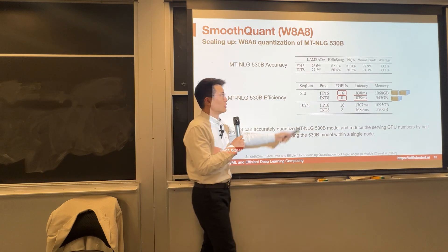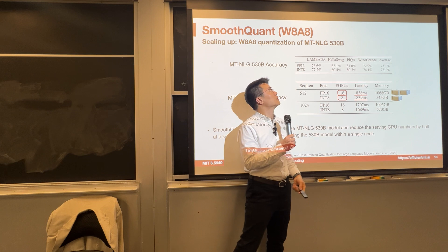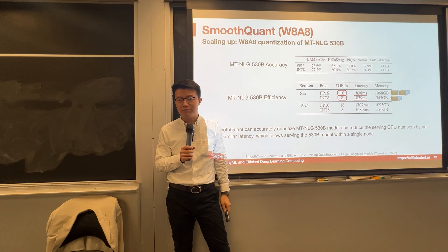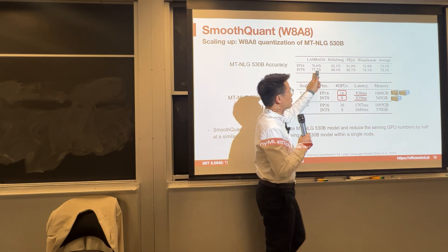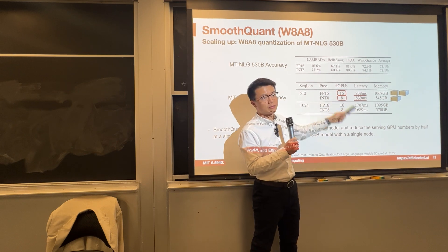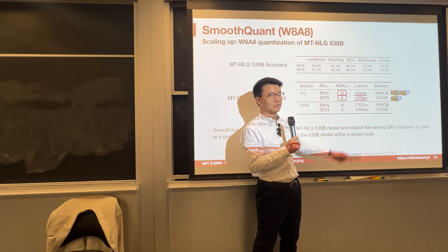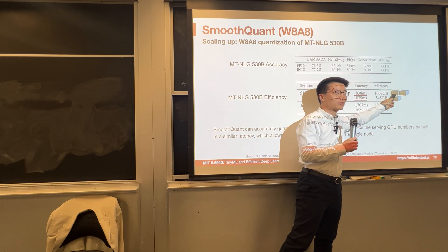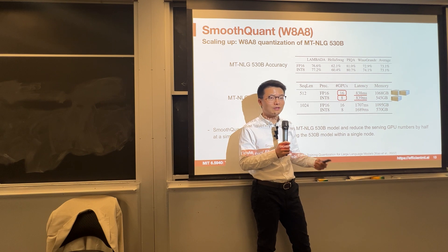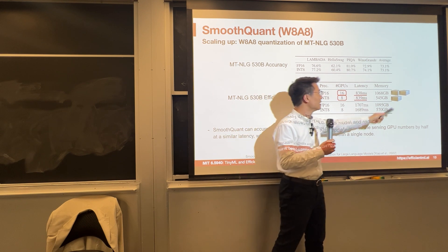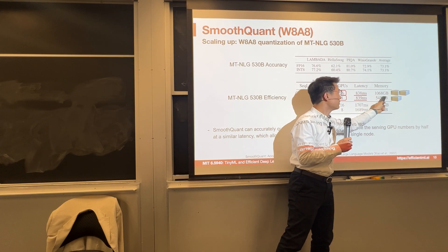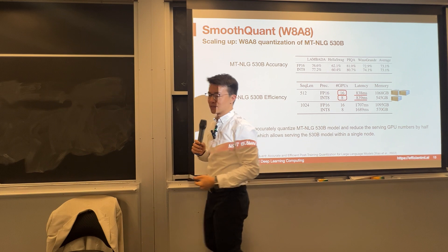What about even larger models — like Megatron-Turing NLG at 530 billion parameters? Accuracy is pretty well maintained. We can reduce the number of serving GPUs from 16 to 8. Each node is super expensive — around $200K–$300K for H100 and $180K for A100 — so reducing by half while keeping latency the same is a significant cost saving.